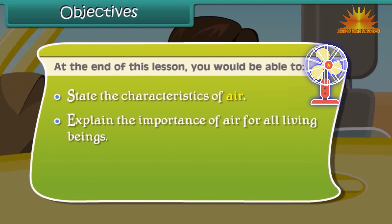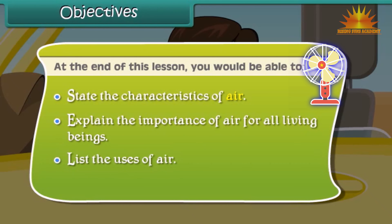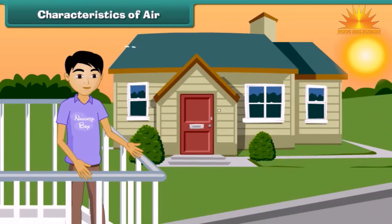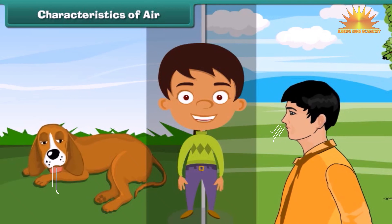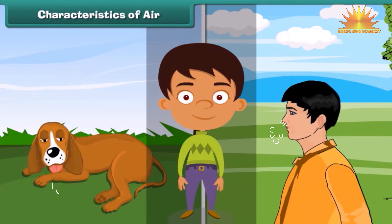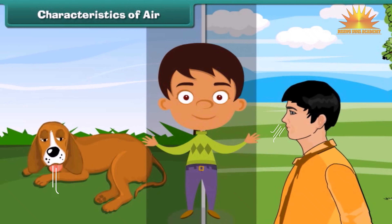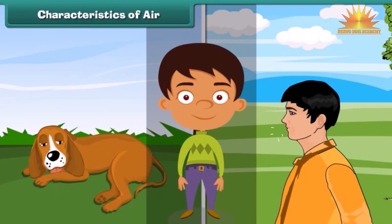Vaibhav and his parents are returning home after two days, having spent the weekend at Kasali. On their way home, they stop at a grocery store to buy a water bottle. Vaibhav decided to stay back in the car. His father advises him to roll up the windows. After a while, Vaibhav feels breathless and suffocated. He immediately rolls down the windows of the car to let in fresh air.